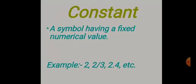The first concept is constant. Constant starts from C and counting also starts from C — it means counting numbers are called constants. A symbol having a fixed numerical value is called a constant. For example, 2, 2/3, 2.4, etc.